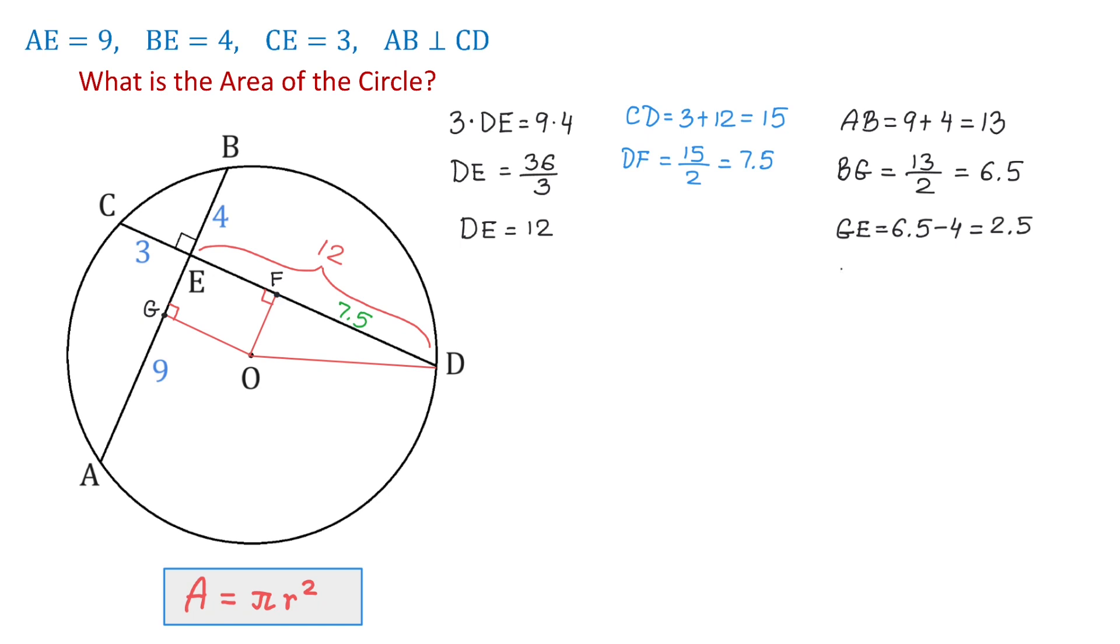Let's write that OF equals 2.5. We will add this to the figure as well. Now, in this right triangle, we will use the Pythagorean theorem and we will say that 2.5 squared plus 7.5 squared equals the hypotenuse OD squared. 2.5 squared plus 7.5 squared equals OD squared.